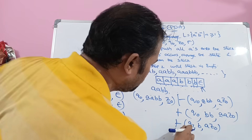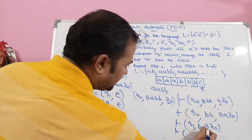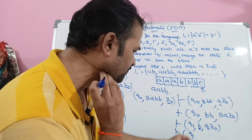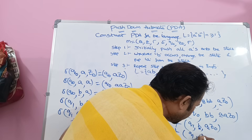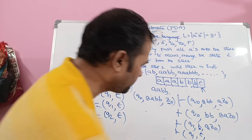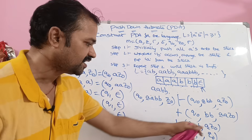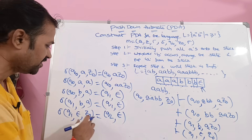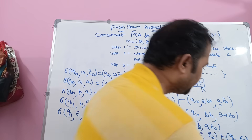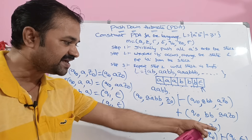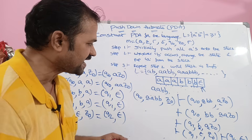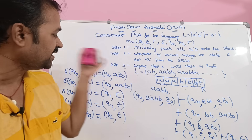State is q1, input symbol is B, top of stack is A. We perform the pop operation — this A is popped from the stack. After popping, we get Z0 on the stack. Now input symbol is epsilon, top of stack is Z0, so we move to q2 and pop Z0. The stack is empty. We reached the final state q2 and the stack is empty, so this input string AABB is completely accepted by this pushdown automata.